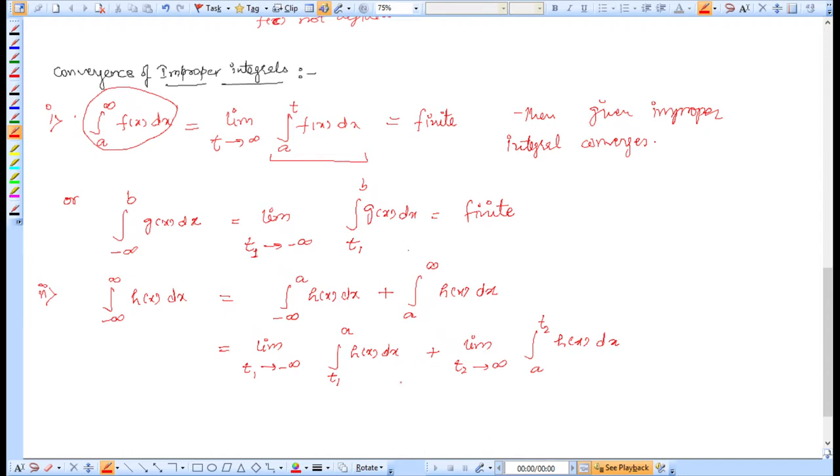If both of these limits give us finite values, then we can say this given improper integral converges. If both values are finite, it converges. If any one is not finite, then we say the improper integral diverges.